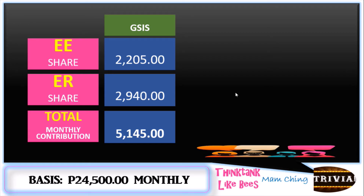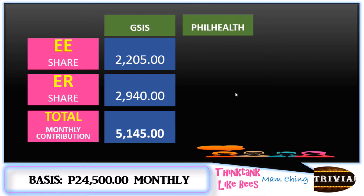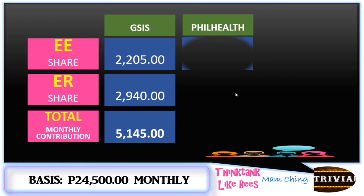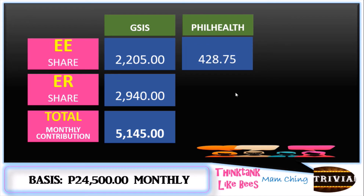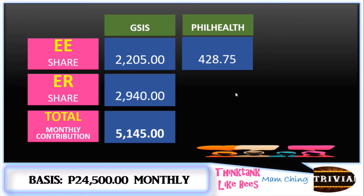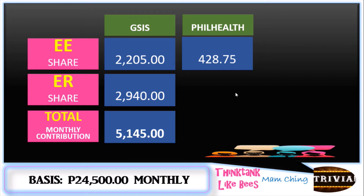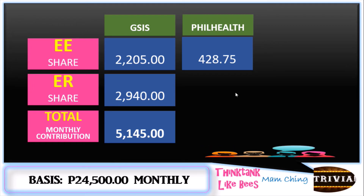So aside from your GSIS contribution, you're also going to share your PhilHealth contribution, which amounts to ₱428.75. Based on the PhilHealth contribution table for 2021, you need to contribute a total of 3.5 percent to the government.